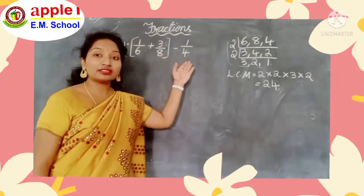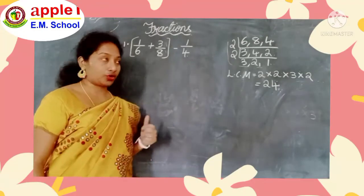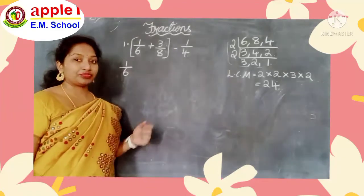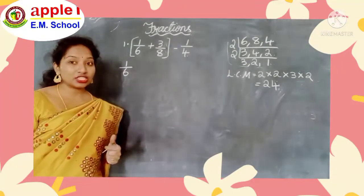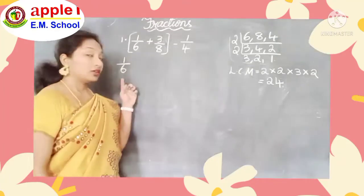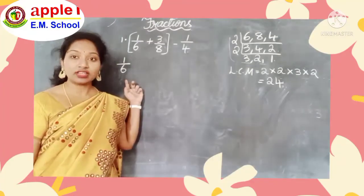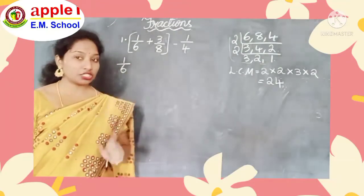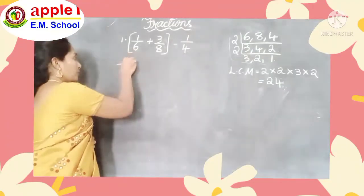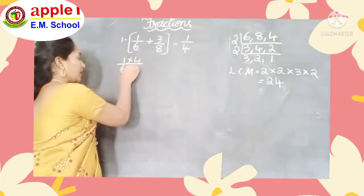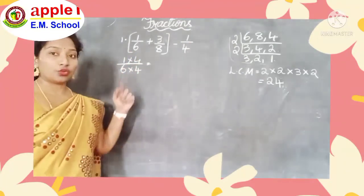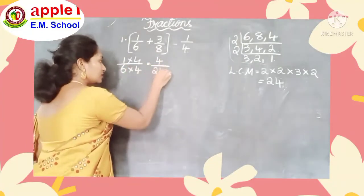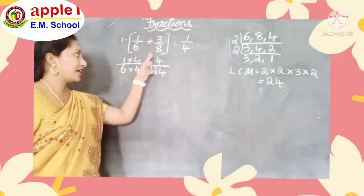So make all the denominators 24. Take the first fraction: 1 by 6. In the 6 times table, when will we get 24? 6 fours are 24. So multiply both numerator and denominator by 4: 1 into 4 by 6 into 4. That gives 4 by 24.